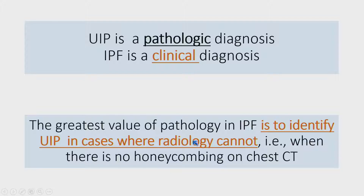The greatest value of pathology today in the diagnosis of IPF is to identify cases of UIP precisely in those cases where radiology cannot make the diagnosis. So if you circle around and look at radiology in those cases, you are not going to be helped — you are going to be misled. We are seeing more and more cases where there's no honeycombing on chest CT, and they're asking us: is this UIP or not? That's what we're going to be focusing on today.